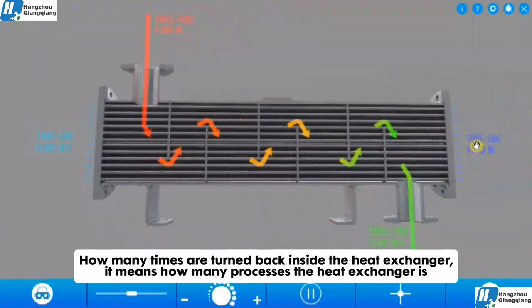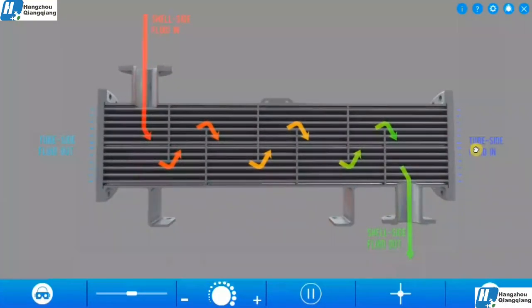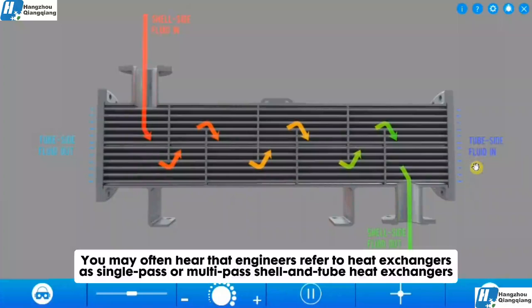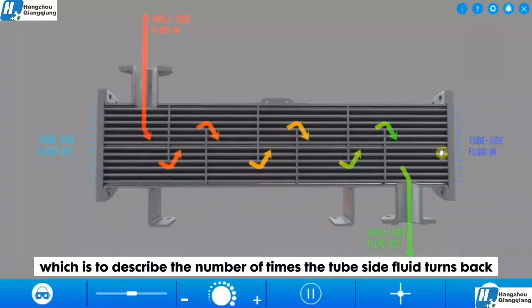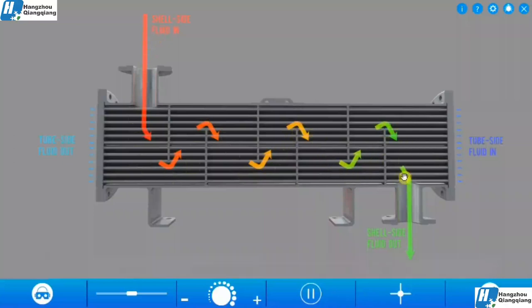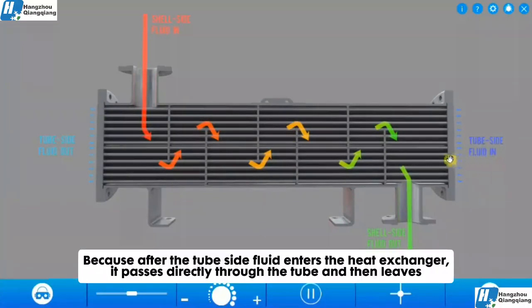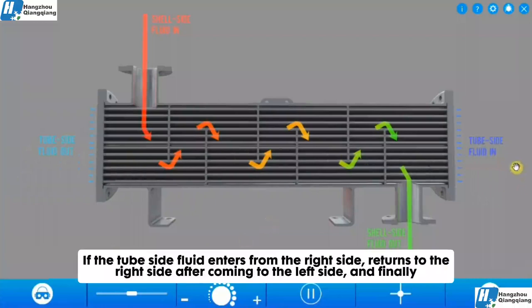How many times the fluid turns back inside the heat exchanger describes how many passes the heat exchanger has. You may often hear engineers refer to heat exchangers as single-pass or multi-pass shell and tube heat exchangers, which describes the number of times the tube side fluid turns back. The shell side fluid passes through baffles to realize multiple return. The shell and tube heat exchanger we see now is a single pass, because after the tube side fluid enters, it passes directly through the tube and then leaves. If the tube side fluid enters from the right side and returns to the right side after reaching the left side, that is a multi-pass design.